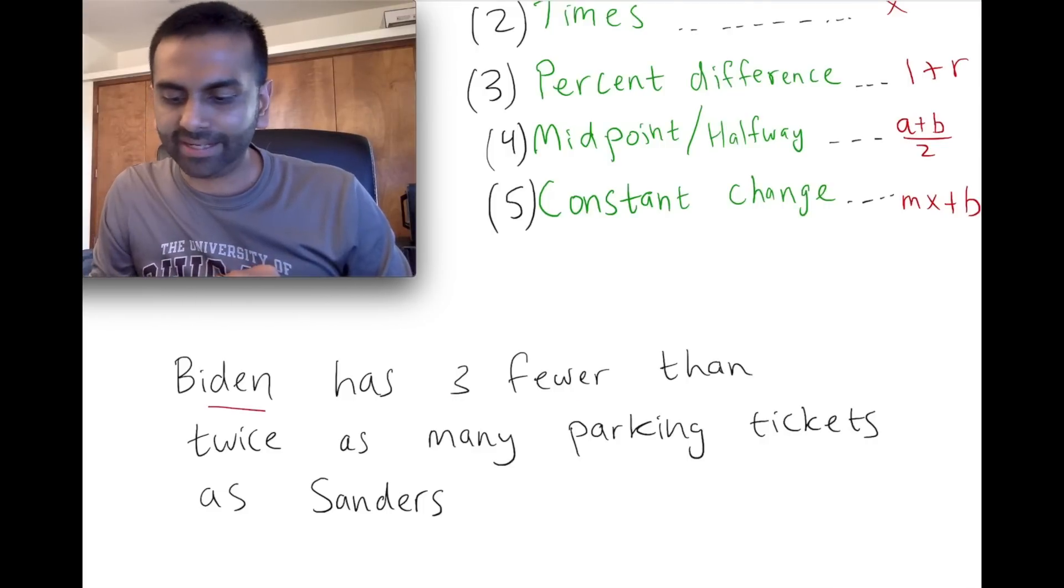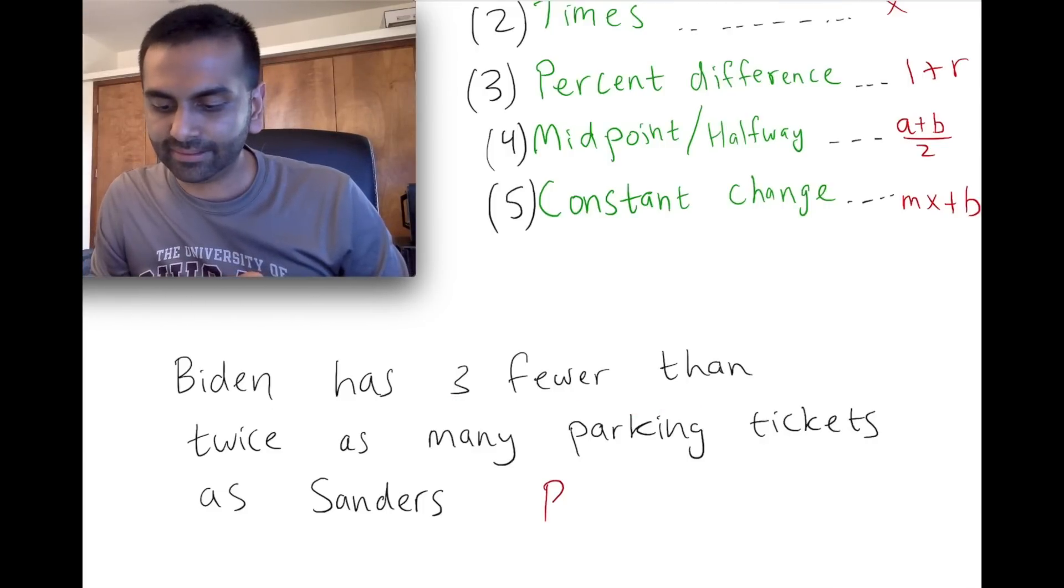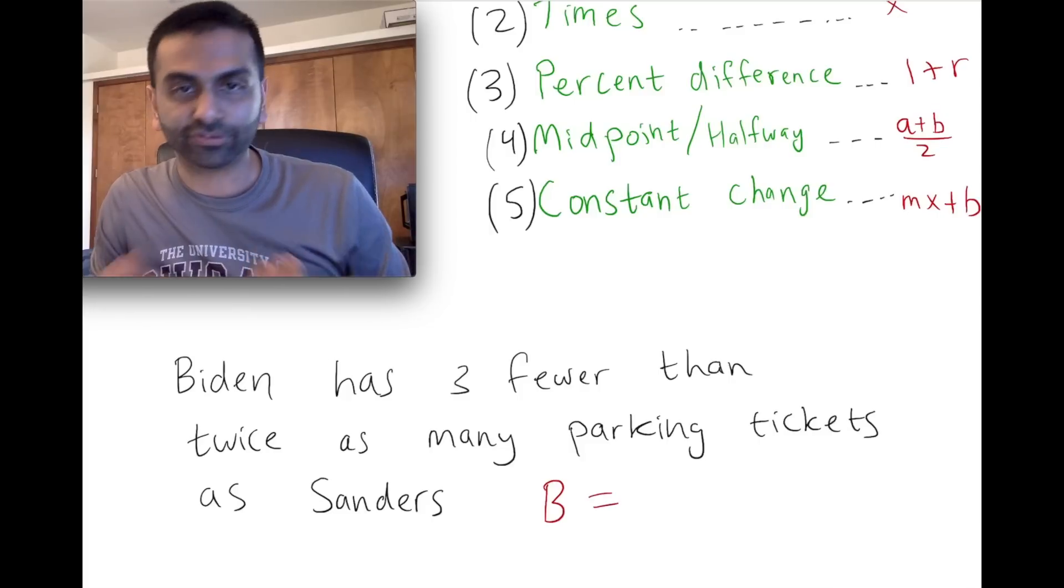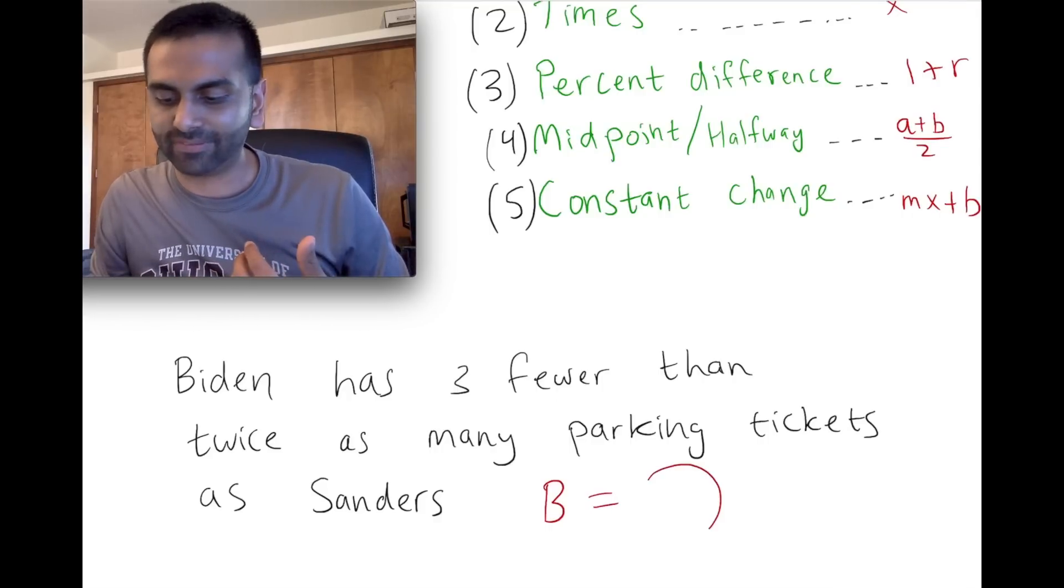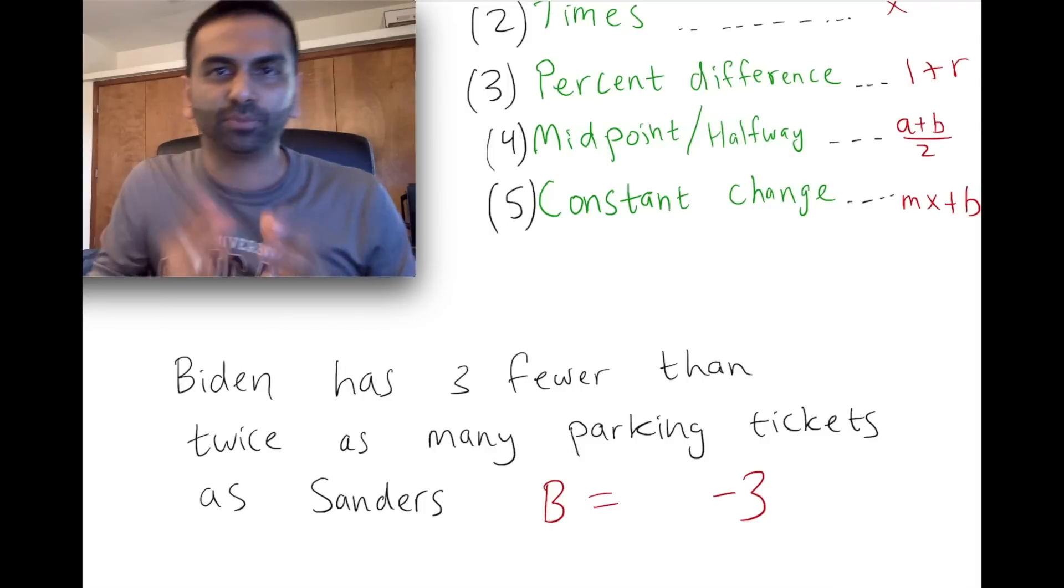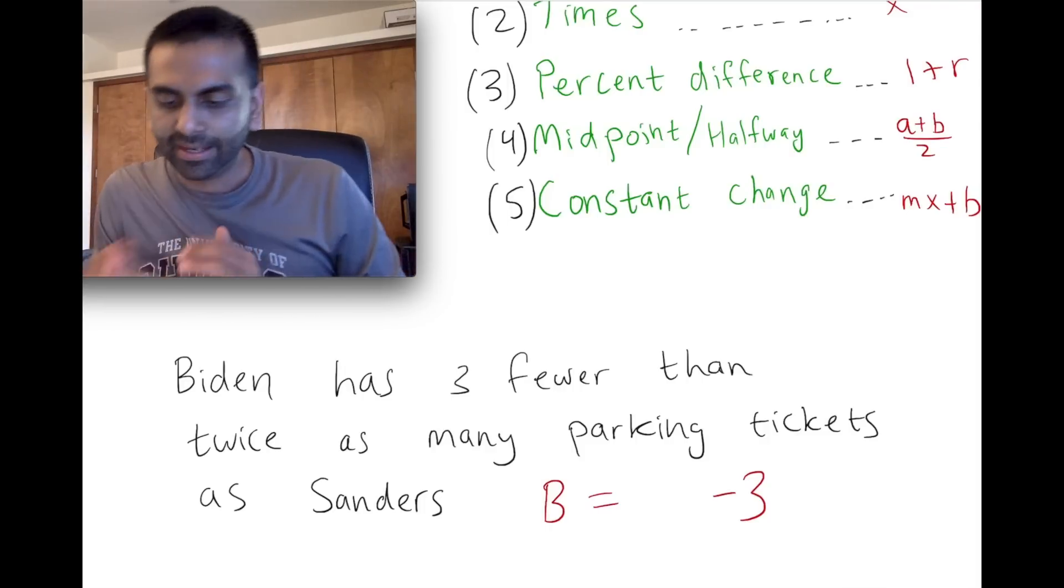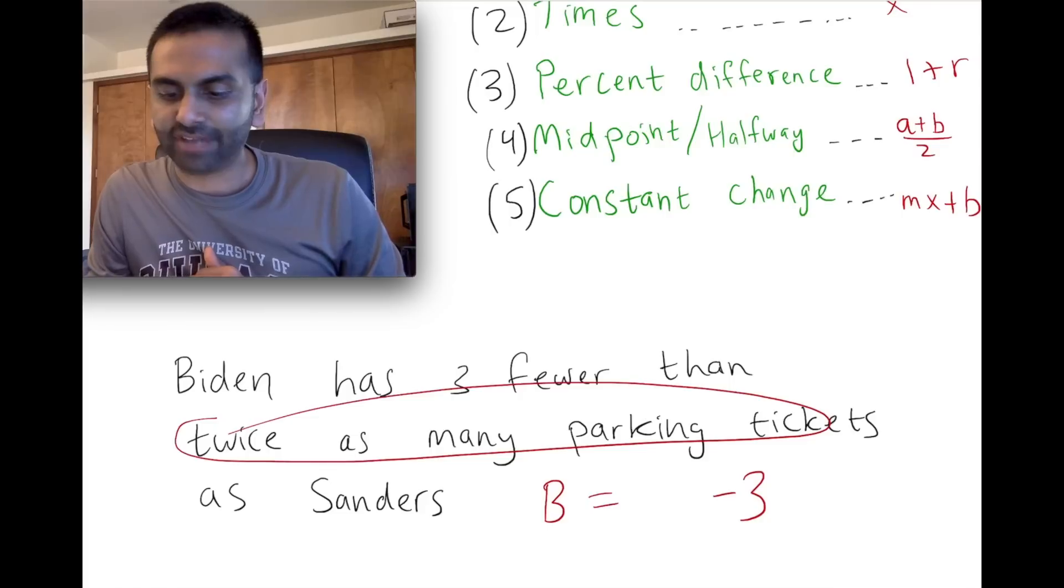want to translate that Biden has three fewer—so three fewer, that's subtraction. Whatever it is minus three. So far, Biden has—so Biden, the number of tickets he has equals, right? So what does that equal? Well, something three fewer than something, so whatever that something is, three fewer than it. So far it's like b equals something minus three. And so what is it? It's three fewer than what? Twice as many as Sanders has.